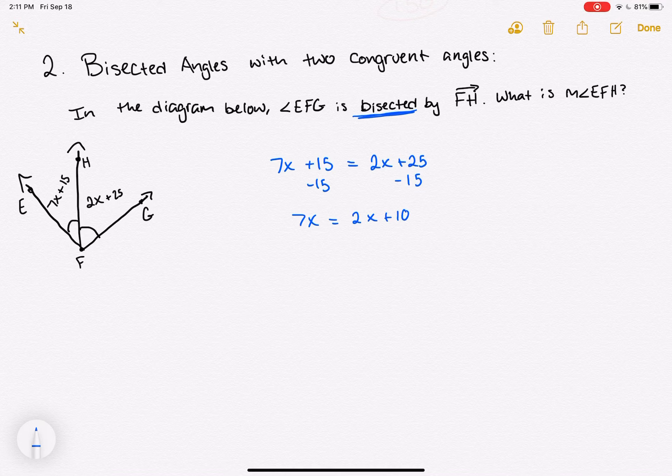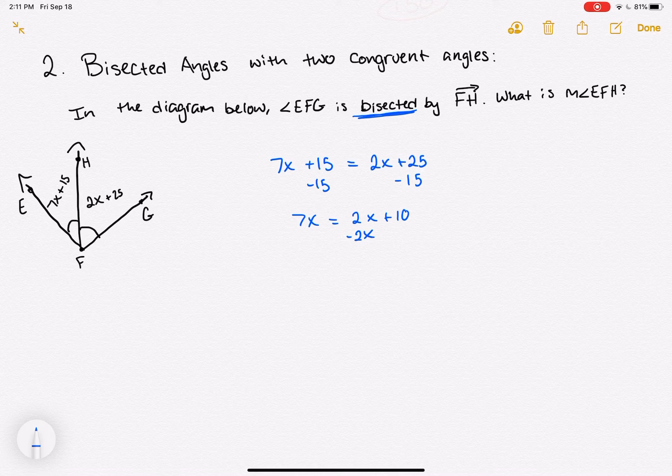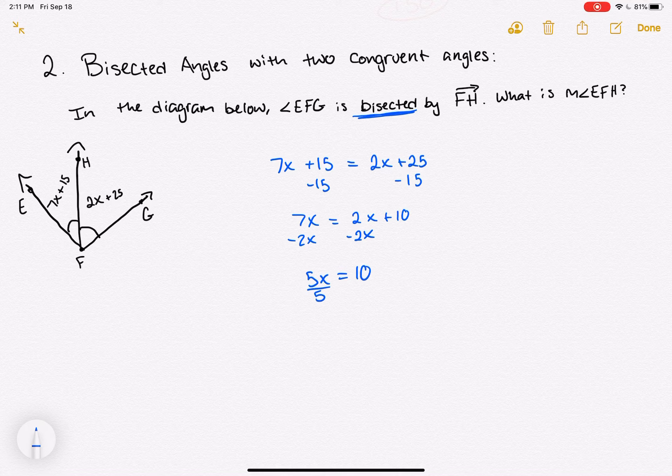I'm going to subtract 2x from both sides. That gives me 5x is equal to 10. Divide out the 5. x is equal to 2.